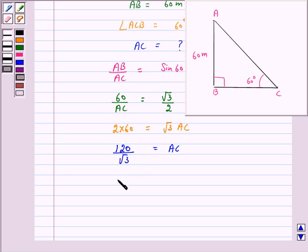We have 120 times root 3 over root 3 times root 3 is equal to AC. Or we have 120 times root 3 upon 3 is equal to AC.